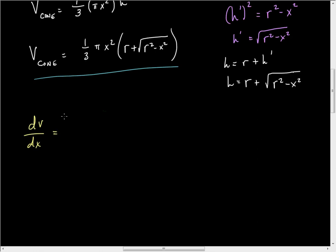And when I do that, I've got the derivative of the first, which is, and I'm going to pull this one-third pi out, so I've got pi over three. And then I'm going to take the derivative of that stuff. And so the derivative of X squared is 2X times R plus root R squared minus X squared.